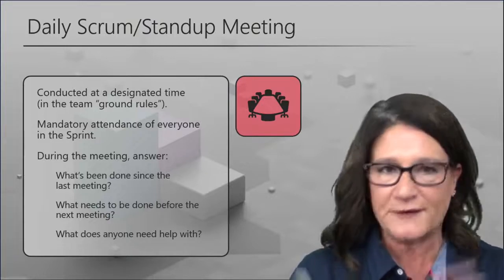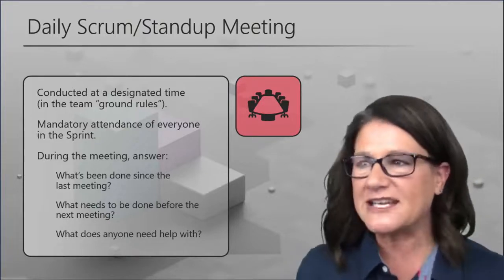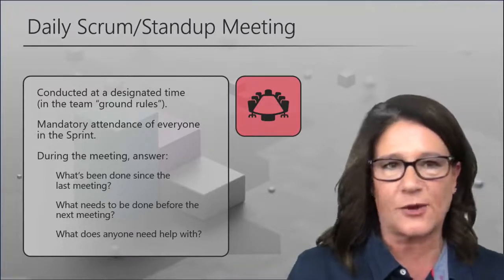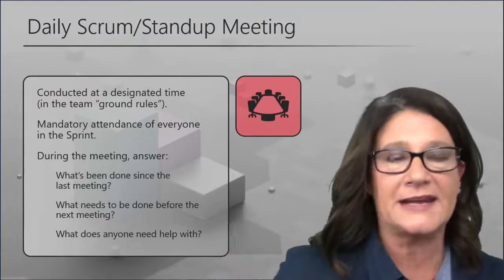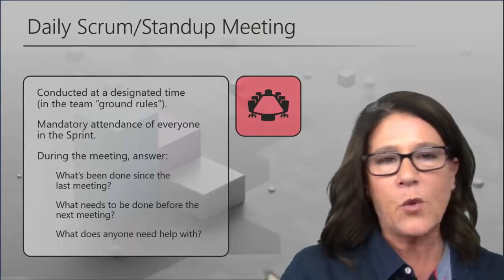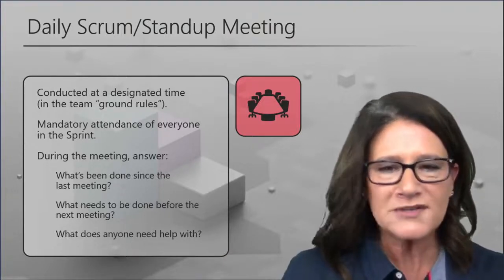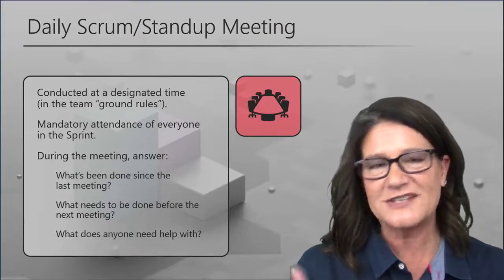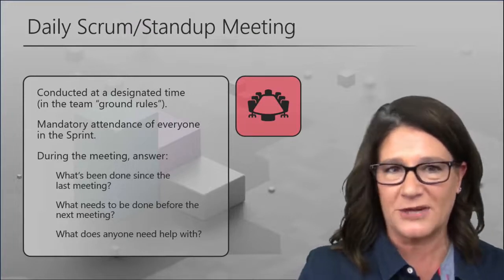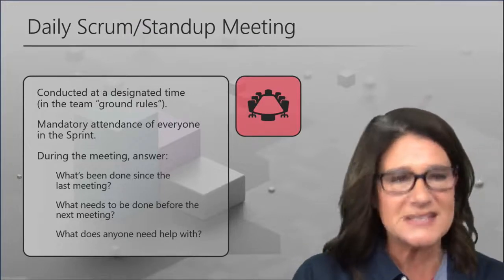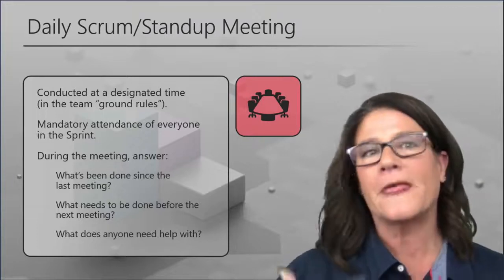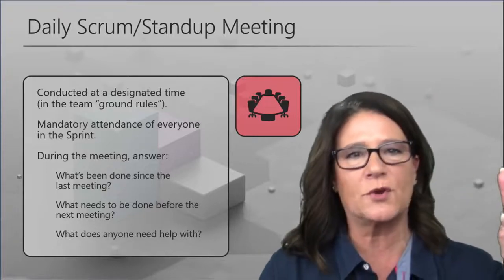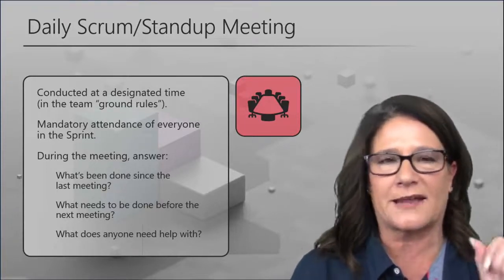If you've ever sat in a weekly meeting with circular conversations — just terrible with your team — what we're trying to do is eliminate the need for those weekly one or two-hour-long status meetings. Instead, every single day at the same time, same place, time-boxed for about 15 minutes, the team gets together and answers individually: What did I do yesterday to help the team meet the goal? What am I going to do today? And what impediments are in my way — what speed bumps am I coming up against?